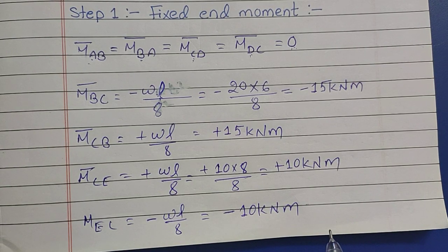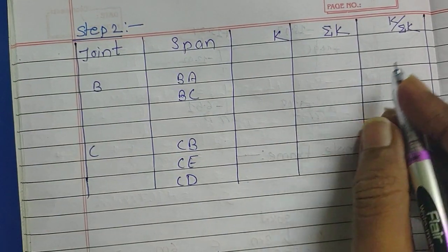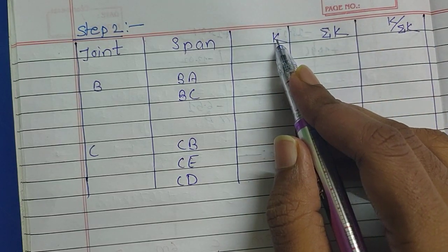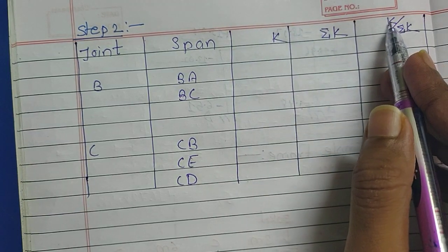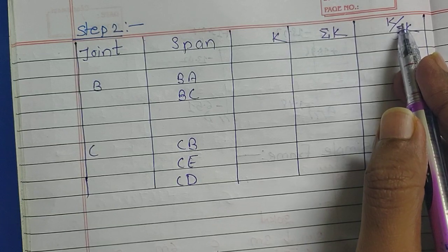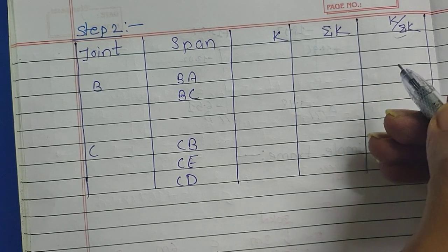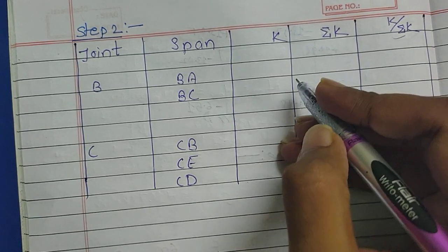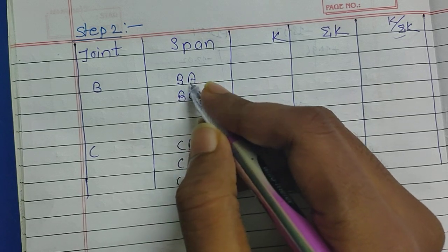Now we will go to step two, where we will be calculating the distribution factor. The relative stiffness is denoted by K, and summation K is the sum of relative stiffness. On dividing relative stiffness by summation K, it gives us the distribution factor. Many students get confused while finding the distribution factor, so do listen carefully.